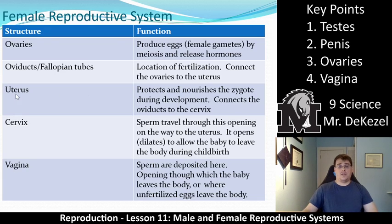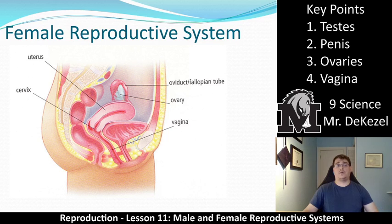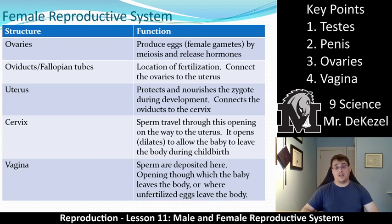The ovaries make the egg and the fallopian tube catches and transports that egg. We have the uterus then — the uterus protects and nourishes the zygote during development. It connects the oviduct to the cervix. So the uterus is where the fertilized egg will live. It is fertilized in the fallopian tube by sperm and then travels down into the uterus where it is protected and nourished and will develop into an embryo and a baby. The cervix is the opening to the uterus, through which sperm travel on the way to the uterus and fallopian tubes. It will also dilate to allow the baby to leave the body during childbirth.